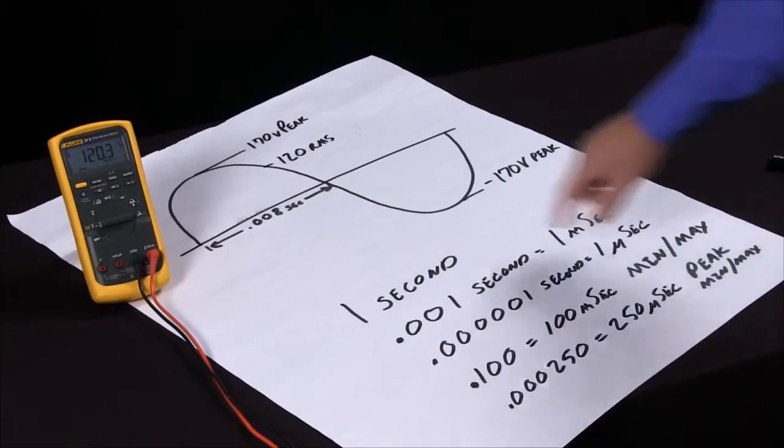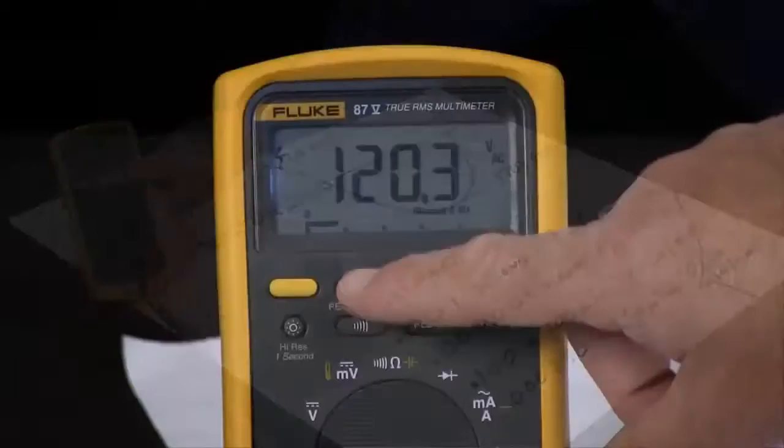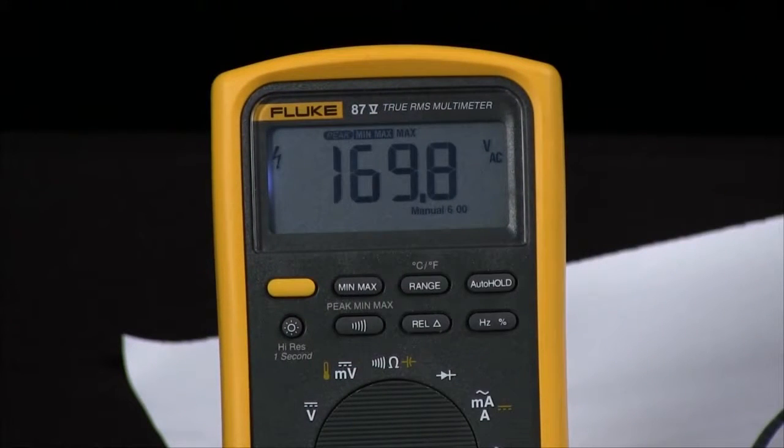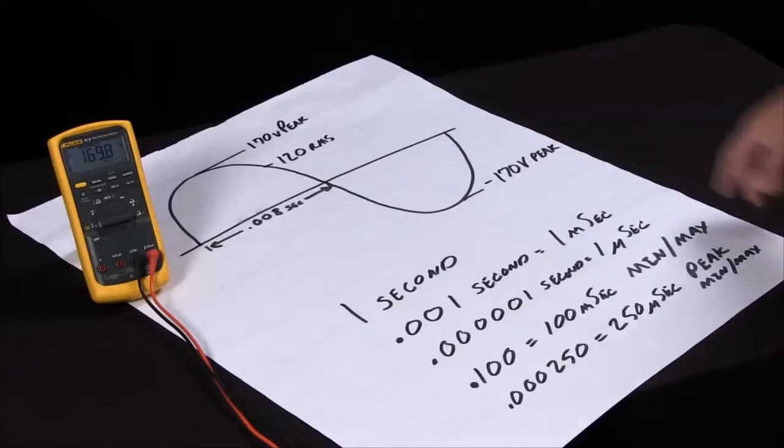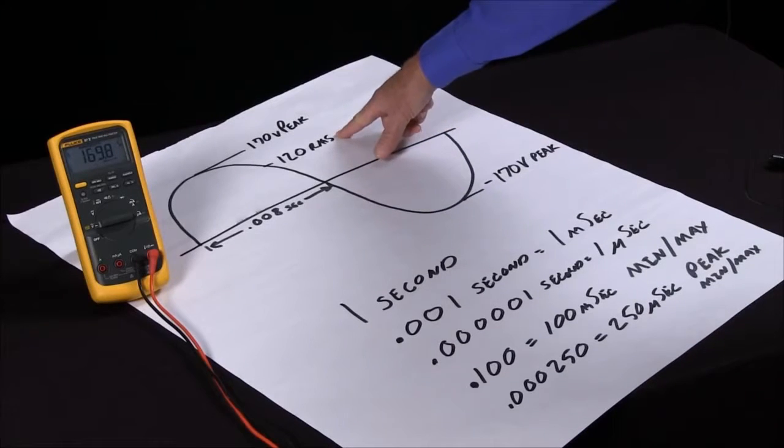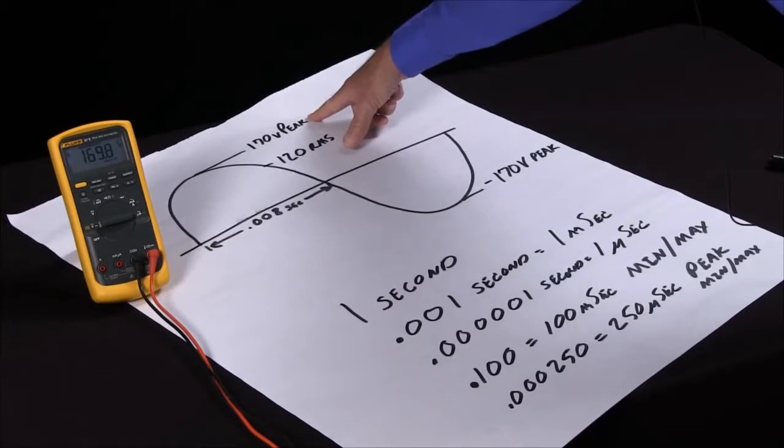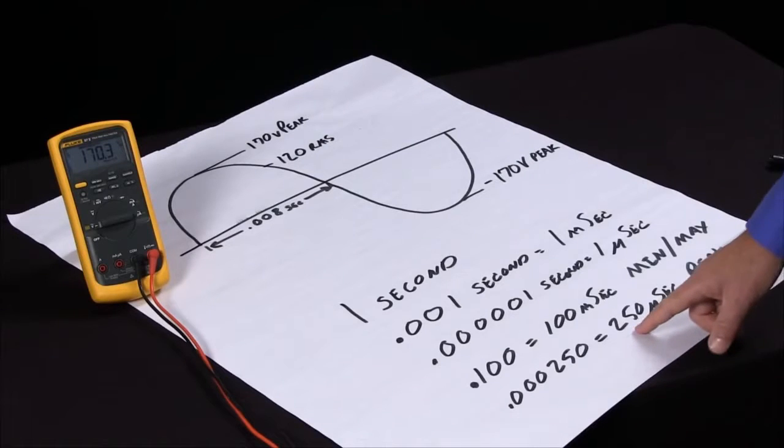When I'm in peak min max to activate that, I hit the min max key and then the peak min max right after that. You can see we've gone from 120 RMS to 170 volts peak because now we have a response time of 250 microseconds.